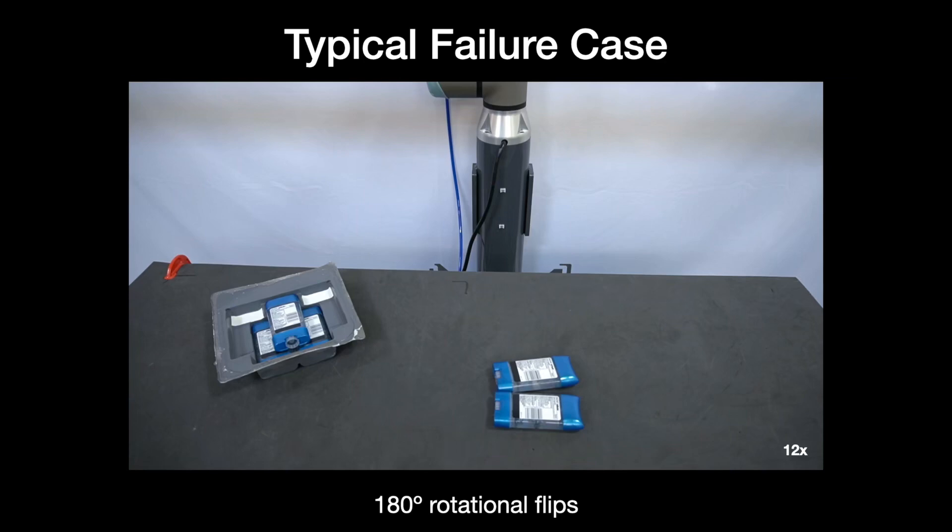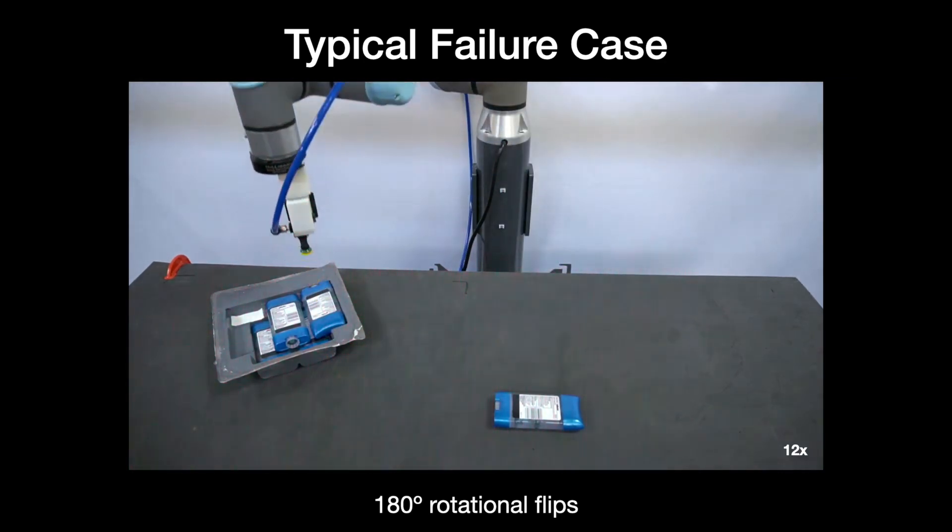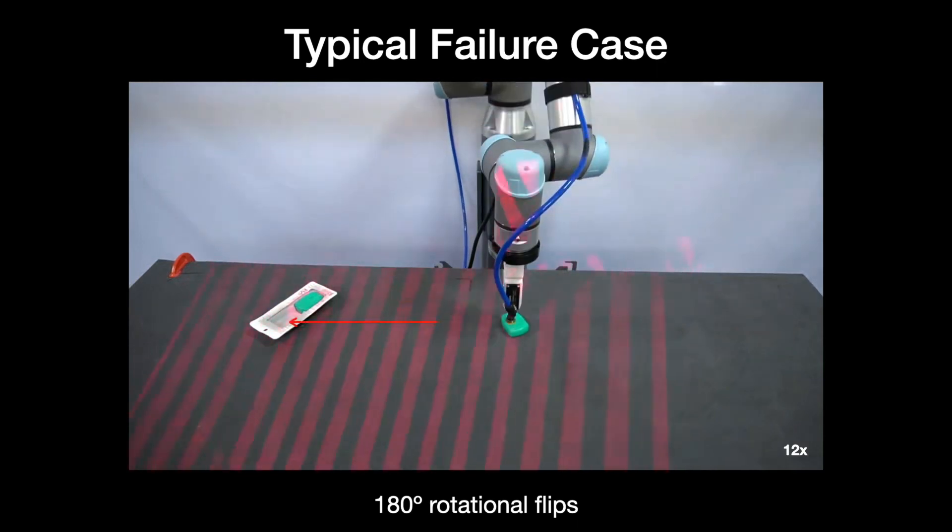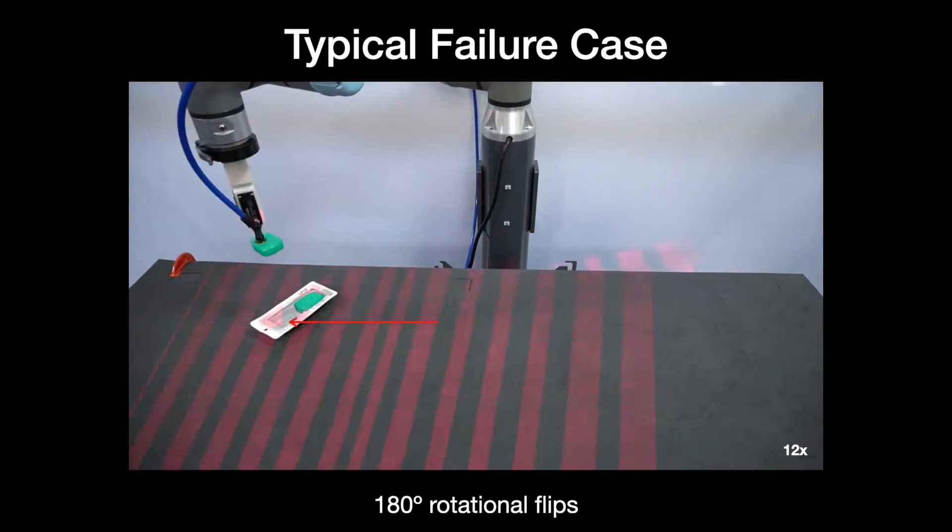Generally, we observe that frequent modes of failure come from the robot placing objects 180 degrees flipped. This typically occurs with objects that look similar when flipped.